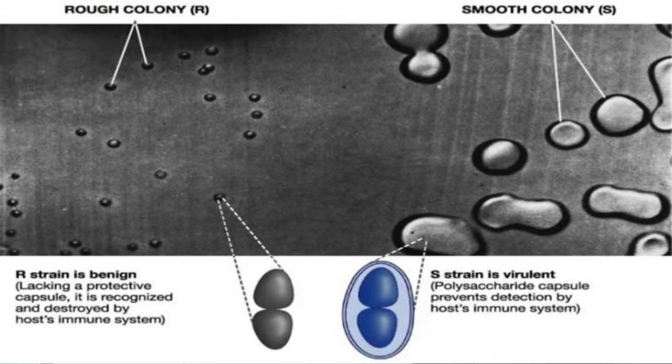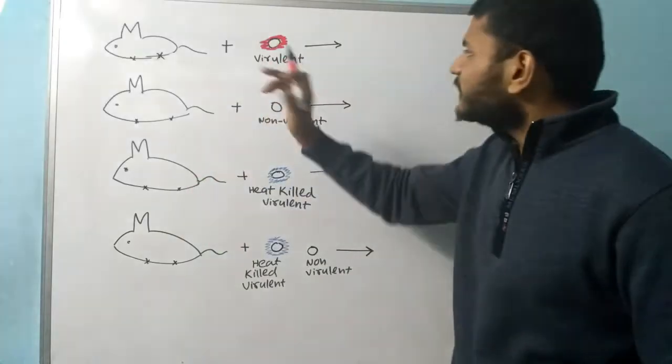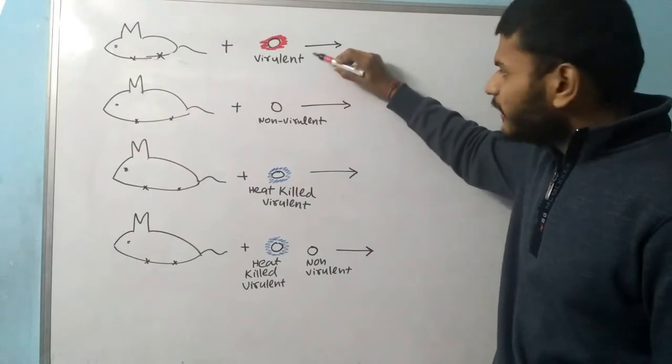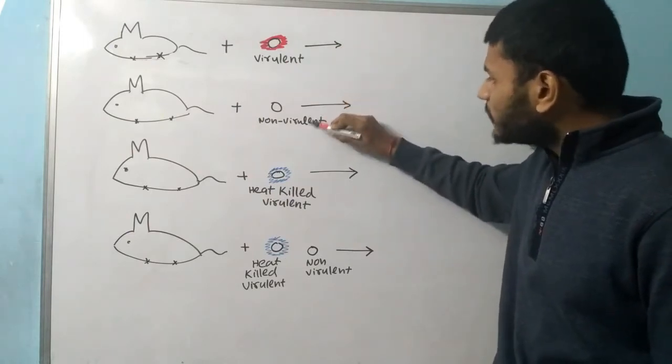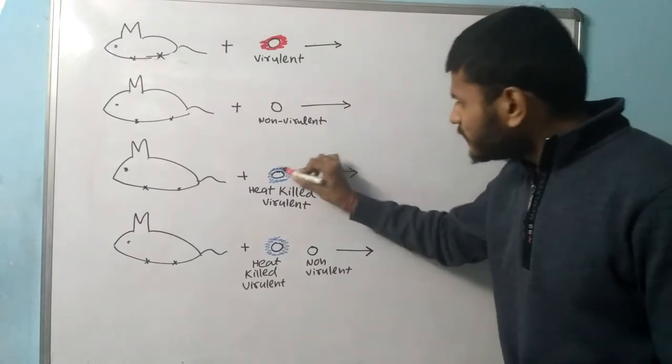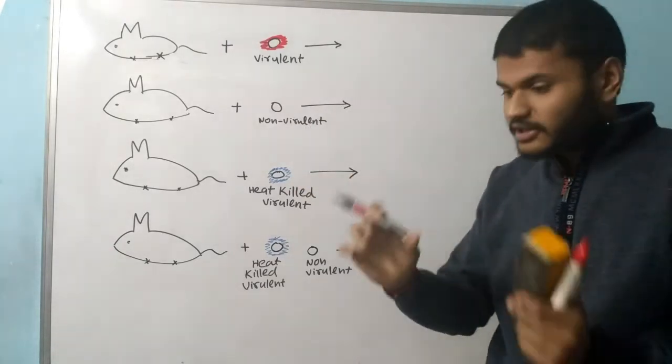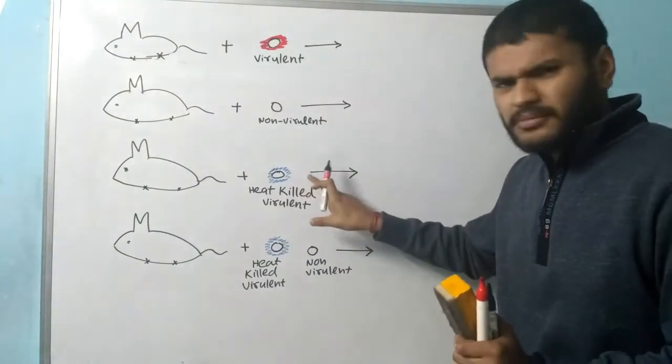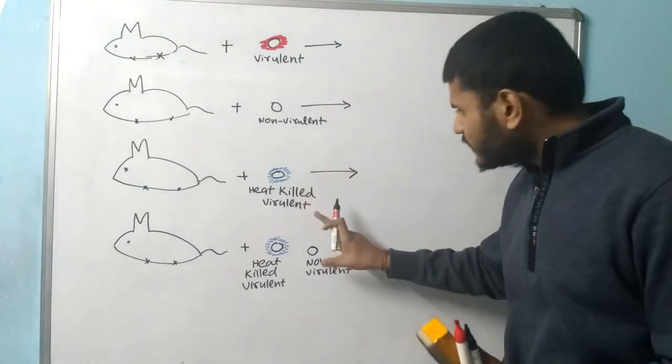Now we will discuss how Griffith's experiment was performed. Griffith took four mice. In the first he took the virulent form, in the second he took the non-virulent form, in the third he took heat-killed virulent. In this case the heat killed the bacteria so it's dead, the DNA content is the same but the bacteria is dead. In the fourth case, the dead bacteria and a non-virulent bacteria are together.